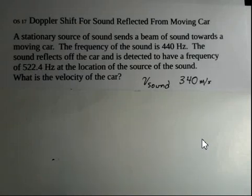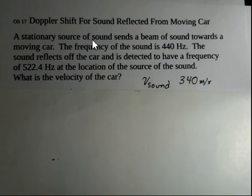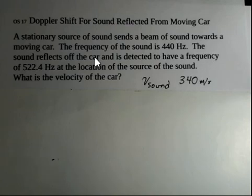In this example problem, we're going to investigate the Doppler shift — the Doppler effect due to motion of either the source or the observer. We're going to have a unit that emits sound. This is not a police radar car problem, but the principles are the same. We're going to emit sound as a beam towards a moving car. The frequency of the sound is 440 hertz. The sound reflects off the car, bounces back to us, and we receive it at 522.4 hertz because of the Doppler shift effect. The car does not have its own sound generator; all of this is just the sound created by the original equipment.